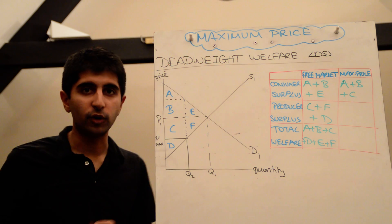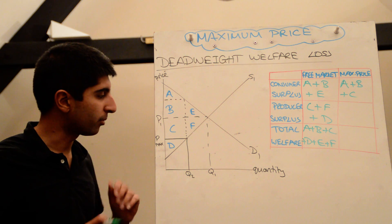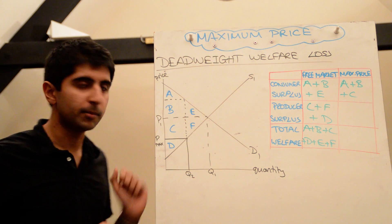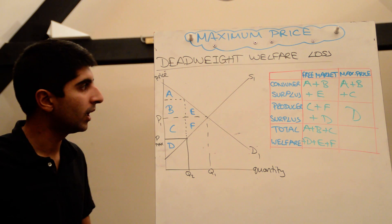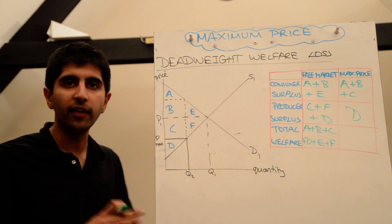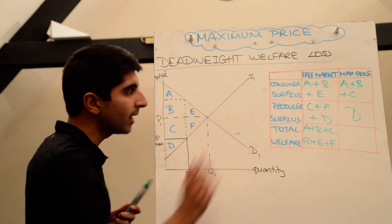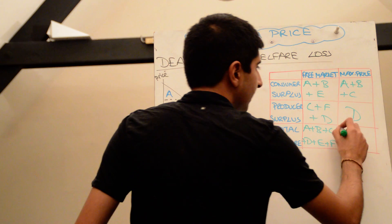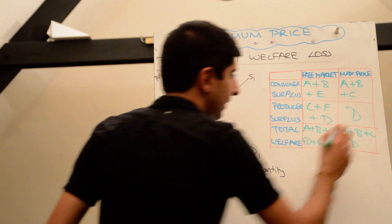Producer surplus though has fallen massively. Producers are suffering hugely from the fallen price. Now the area below the price and above the supply curve is only D, a big loss for producers. There is no other impact on governments here, no cost or revenue for the government to look at. So now we just add up our total surpluses, and what we get is A plus B plus C plus D.